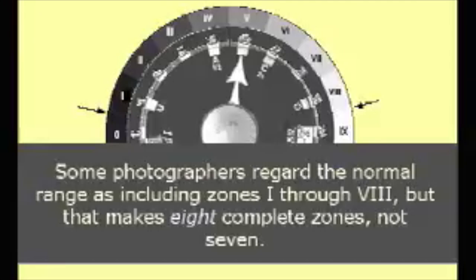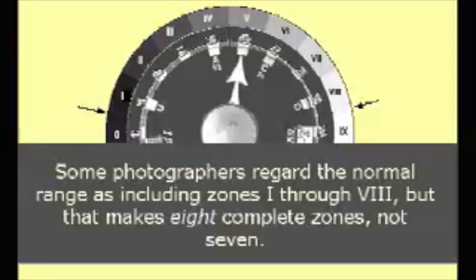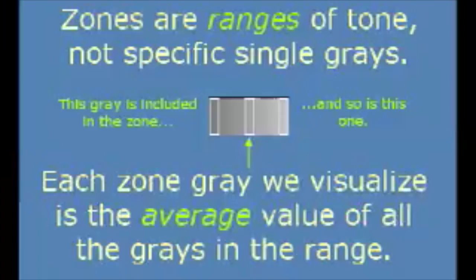Some photographers regard the normal range as including zones 1 through 8, but that makes 8 complete zones, not the standard 7. If black and white are included as zones, the total is 10, and the middle gray indicated by the normal pointer as zone 5 is then about 9% reflectance. Zones are ranges of tones, not specific single grays. Each zone gray we visualize is the average value of all the grays included within that zone range.